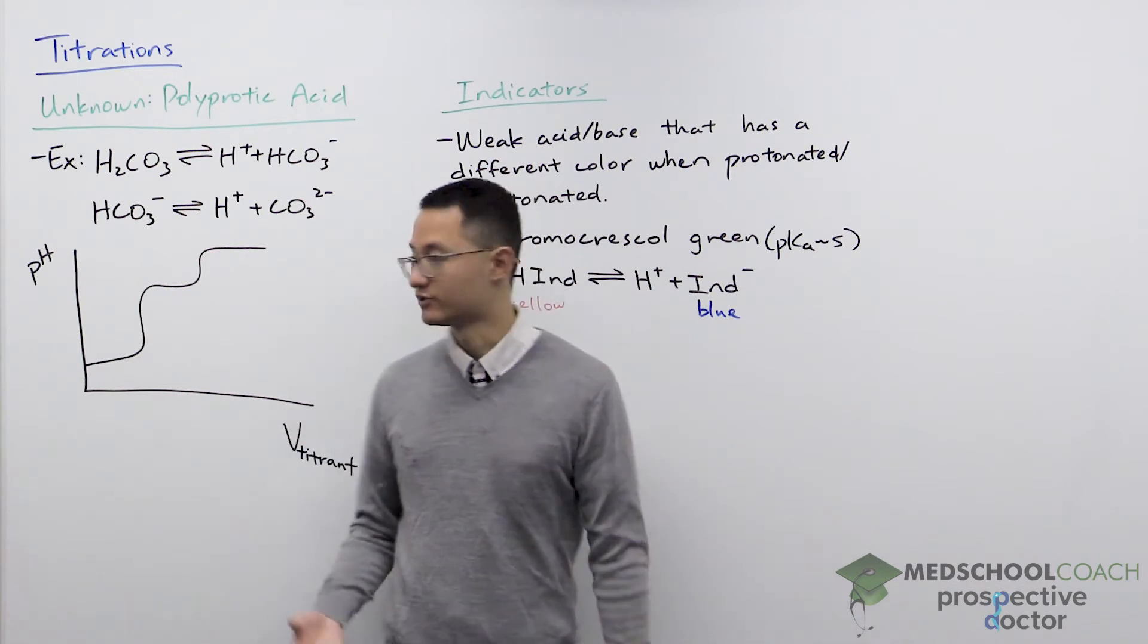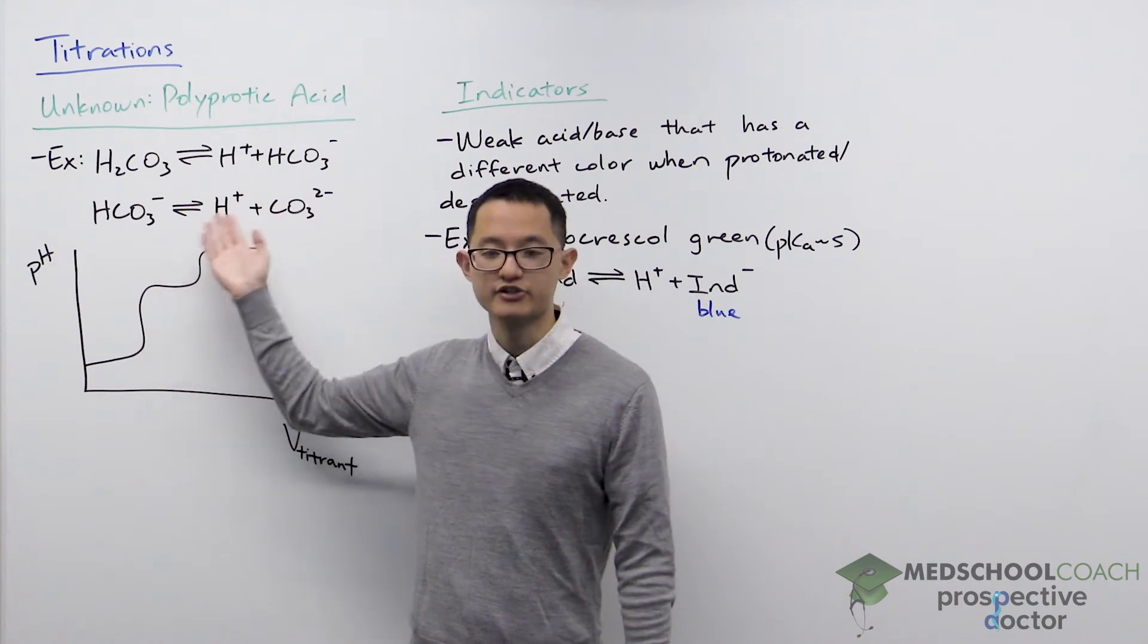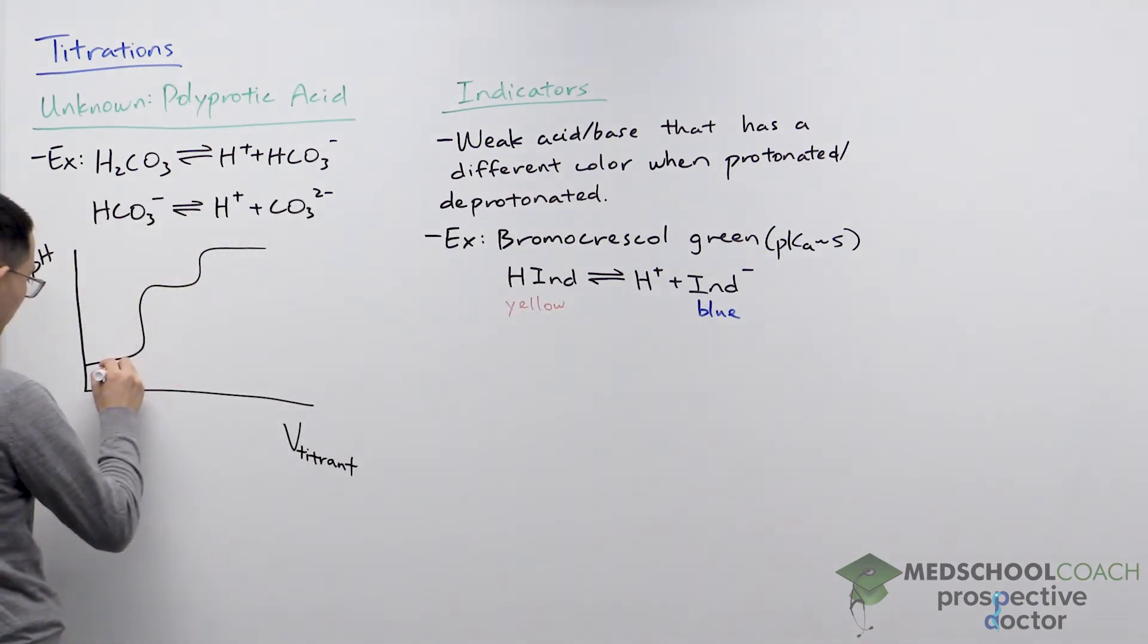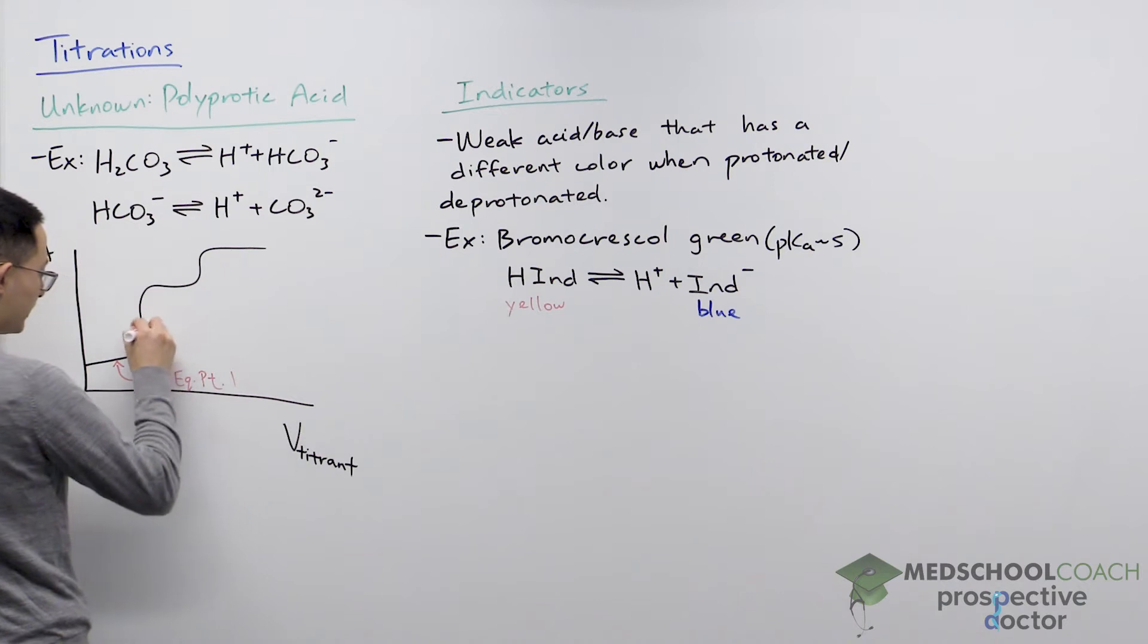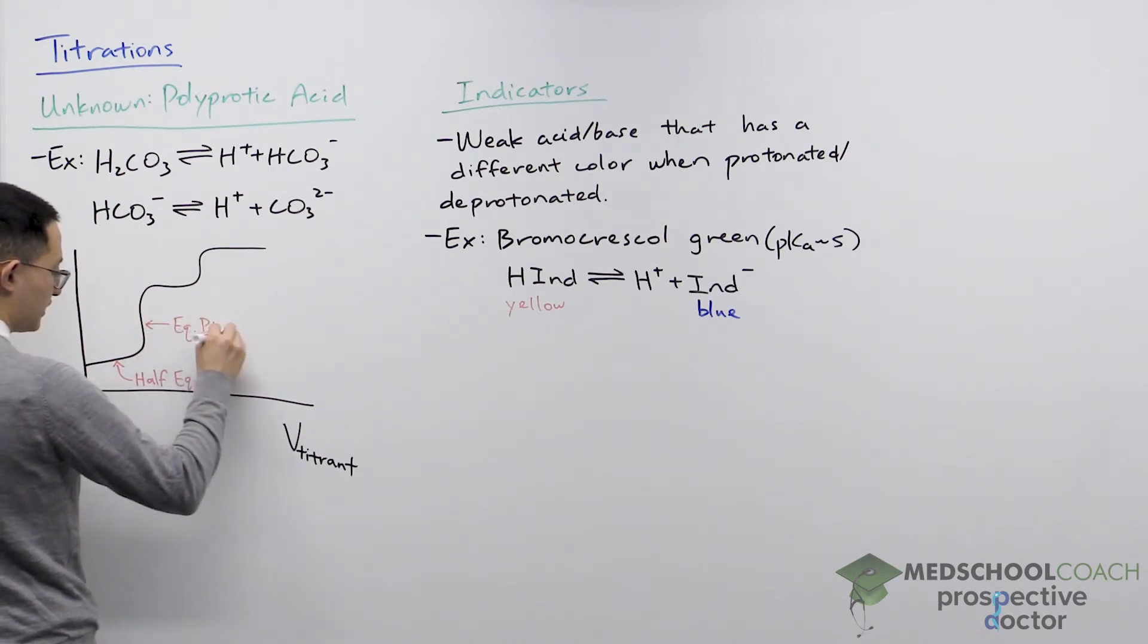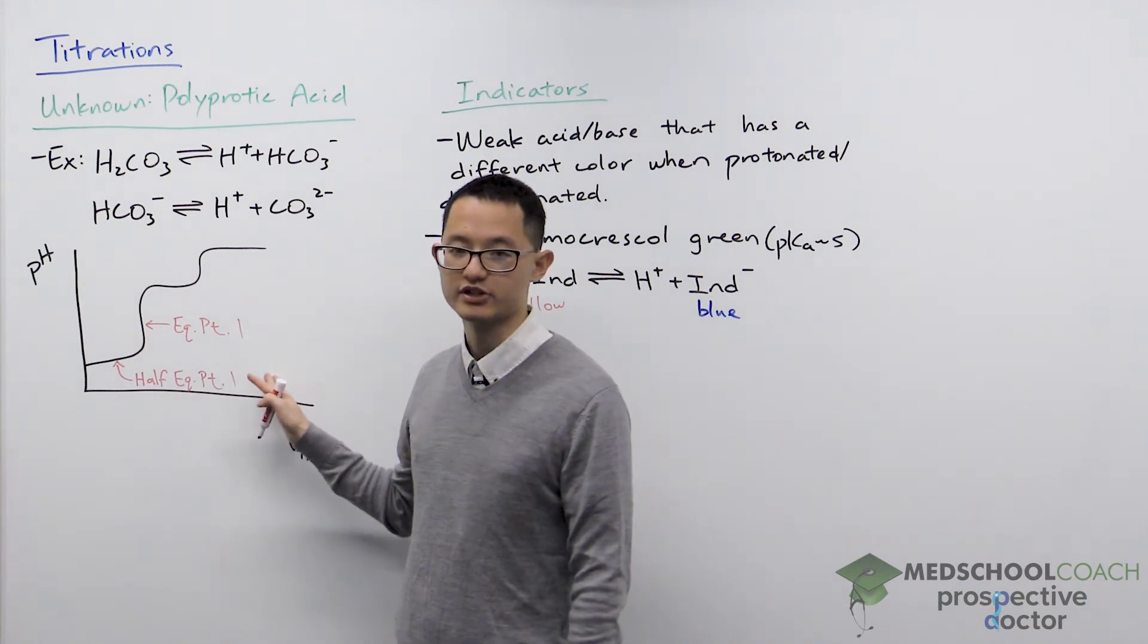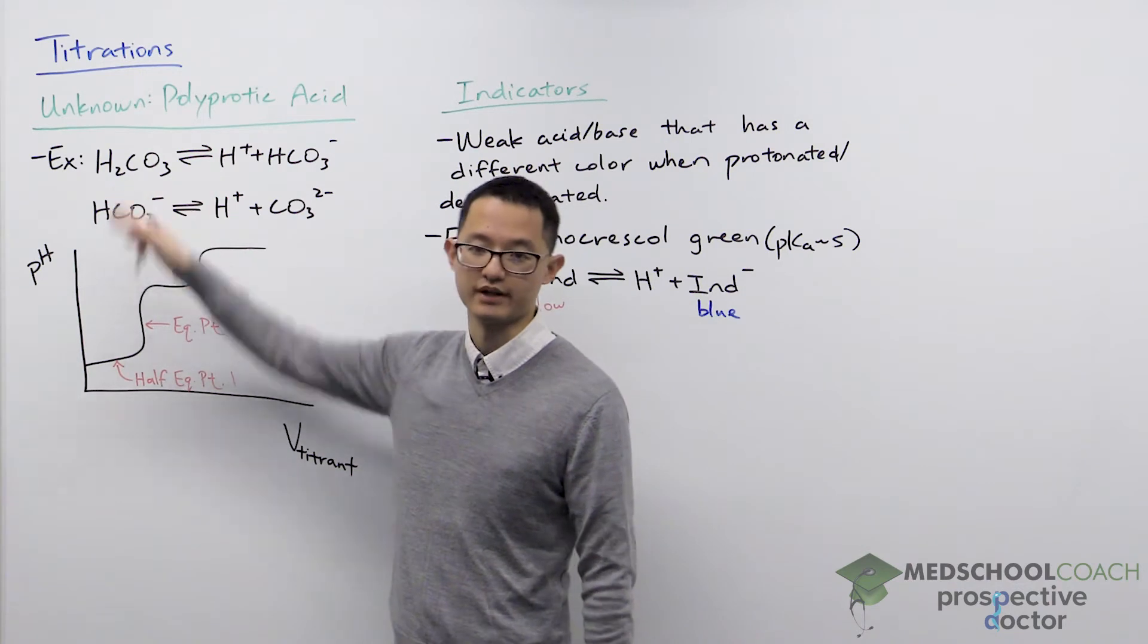Basically you just have one half equivalence point and equivalence point per hydrogen ion that can be dissociated. So here I can draw half equivalence point number one as well as equivalence point number one. These two points that I have drawn in refer to the dissociation of the first hydrogen ion from carbonic acid.